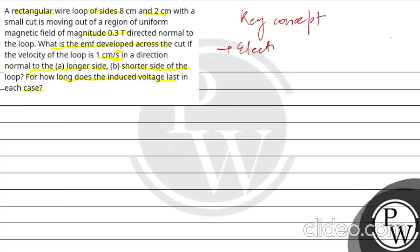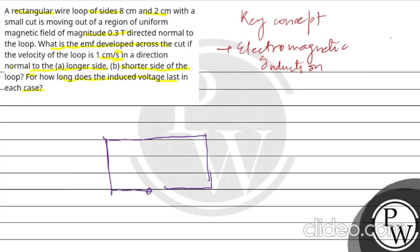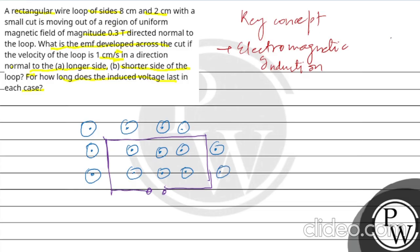The key concept in this question is electromagnetic induction. We have a rectangular loop with a small cut. The loop has length 8 centimeter and width 2 centimeter. We are moving it out of the magnetic field — in one case along the direction normal to the long side, and in the other normal to the shorter side.